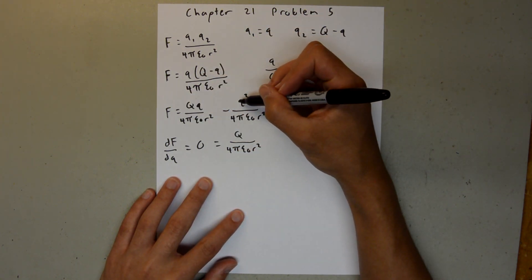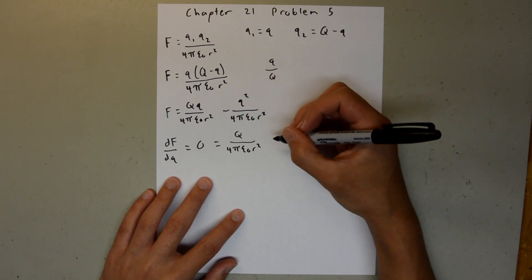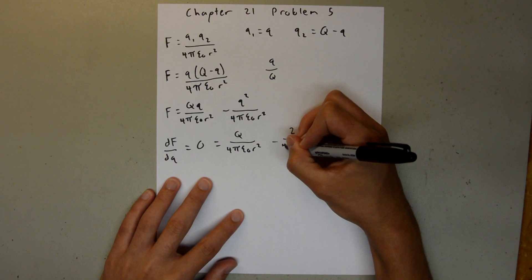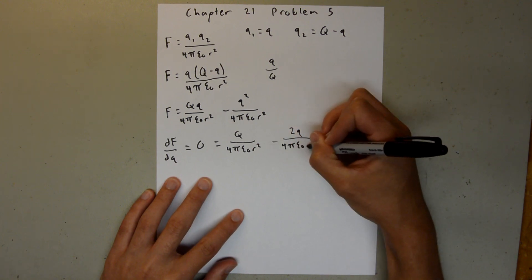And then, on this side, the derivative of q squared is going to be 2q. So, we'll have minus 2q over 4 pi epsilon sub 0 r squared.